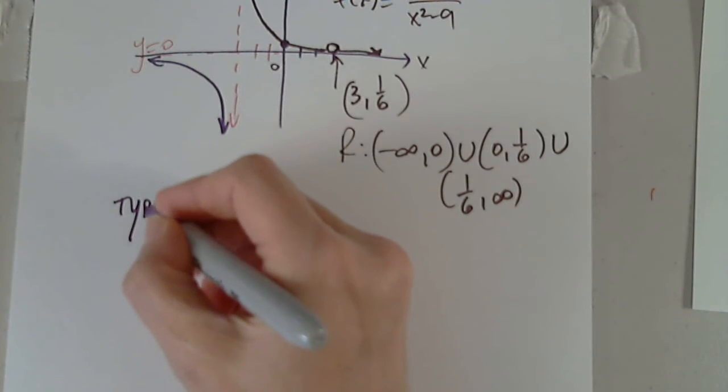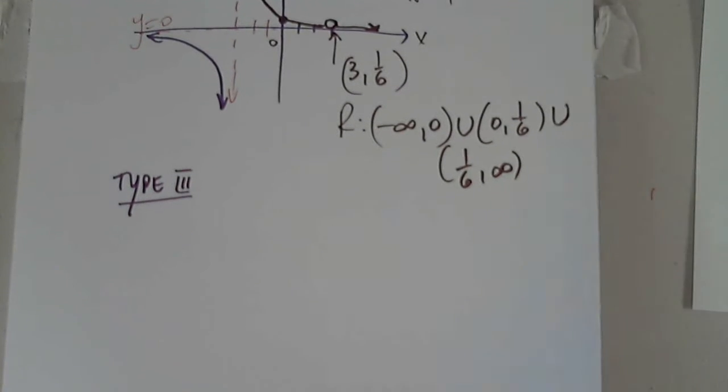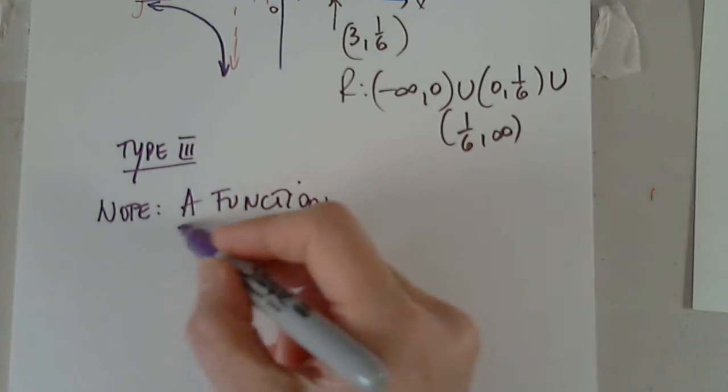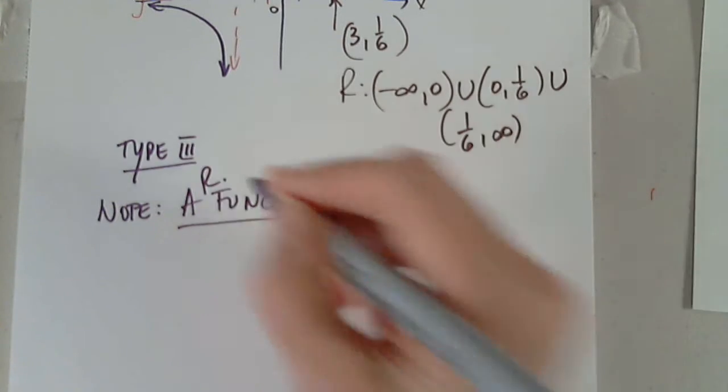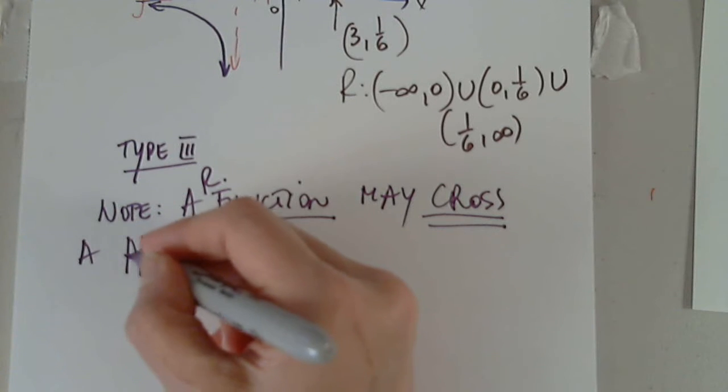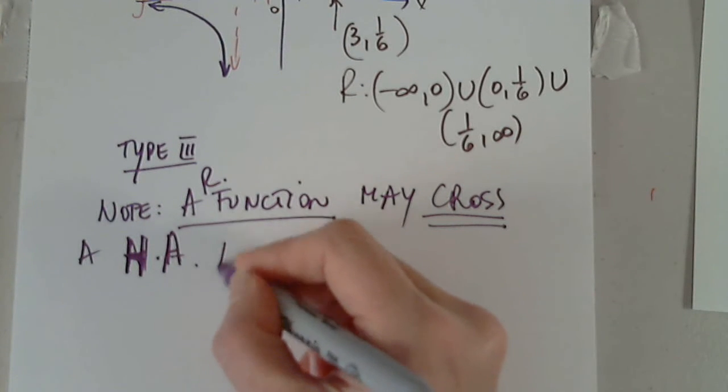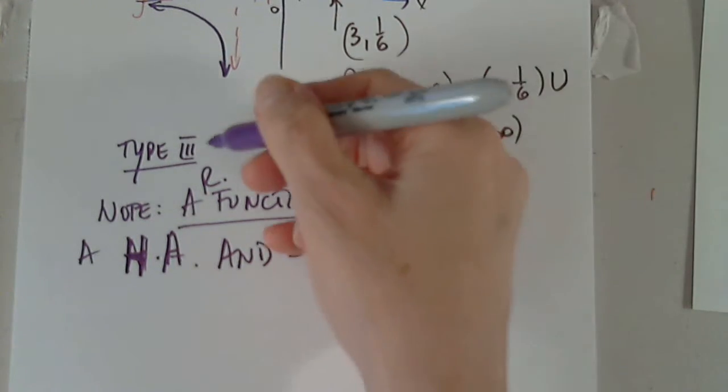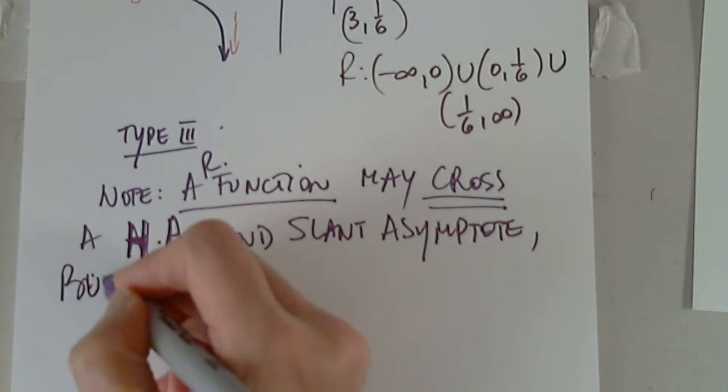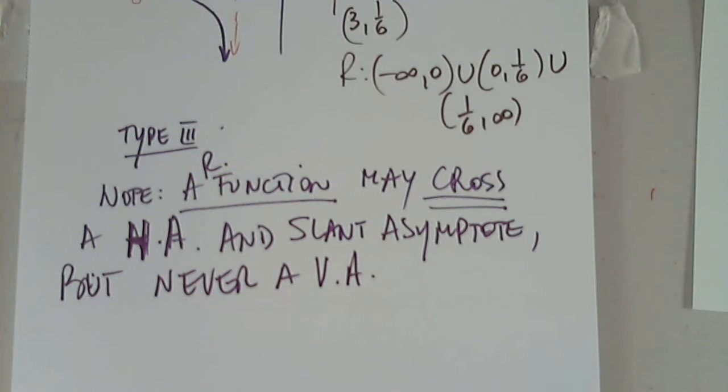Finally, type 3. Before we write type 3 or talk about type 3, I want to write a note. A function, a rational function of course, rational function, may cross, may cross, a vertical, a horizontal asymptote, sorry, horizontal asymptote, and a slant, which I haven't presented yet. It's, slant is for type 3, a slant asymptote, but never, never, ever, a vertical asymptote. It's undefined there. How can you cross it? But can you cross a horizontal and slant? Yes, it can. It can cross a horizontal and it can cross a slant.